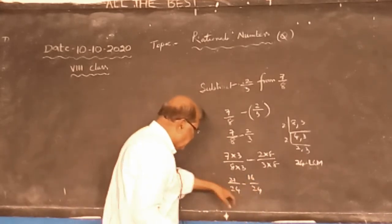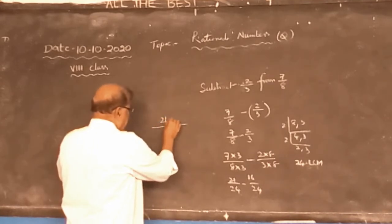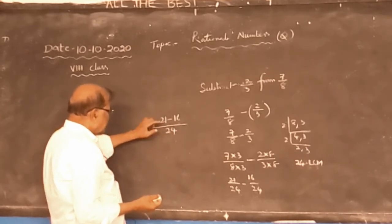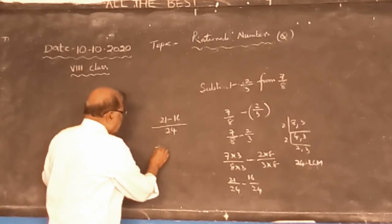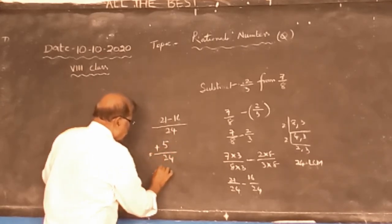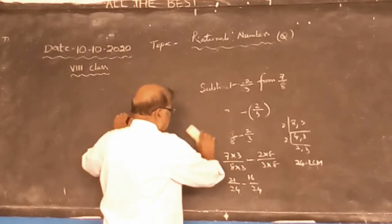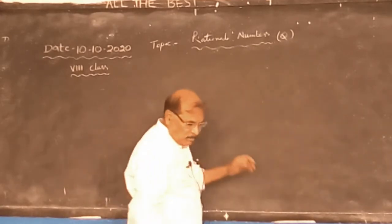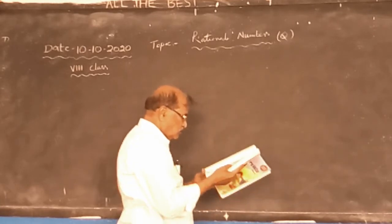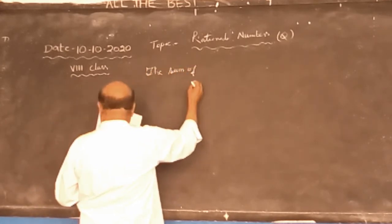When the denominators are equal, they are similar fractions. Both fractions have denominator 24. So 21 minus 16: among these two, 21 is greater, so the result is positive. 21 minus 16 is 5 by 24. This is equal to 5 by 24. This is the way of subtracting rational numbers.